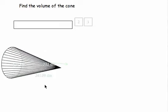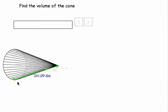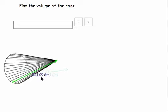Find the volume of the cone. This is a cone, and we have a slant height of 241.09 decimeters.